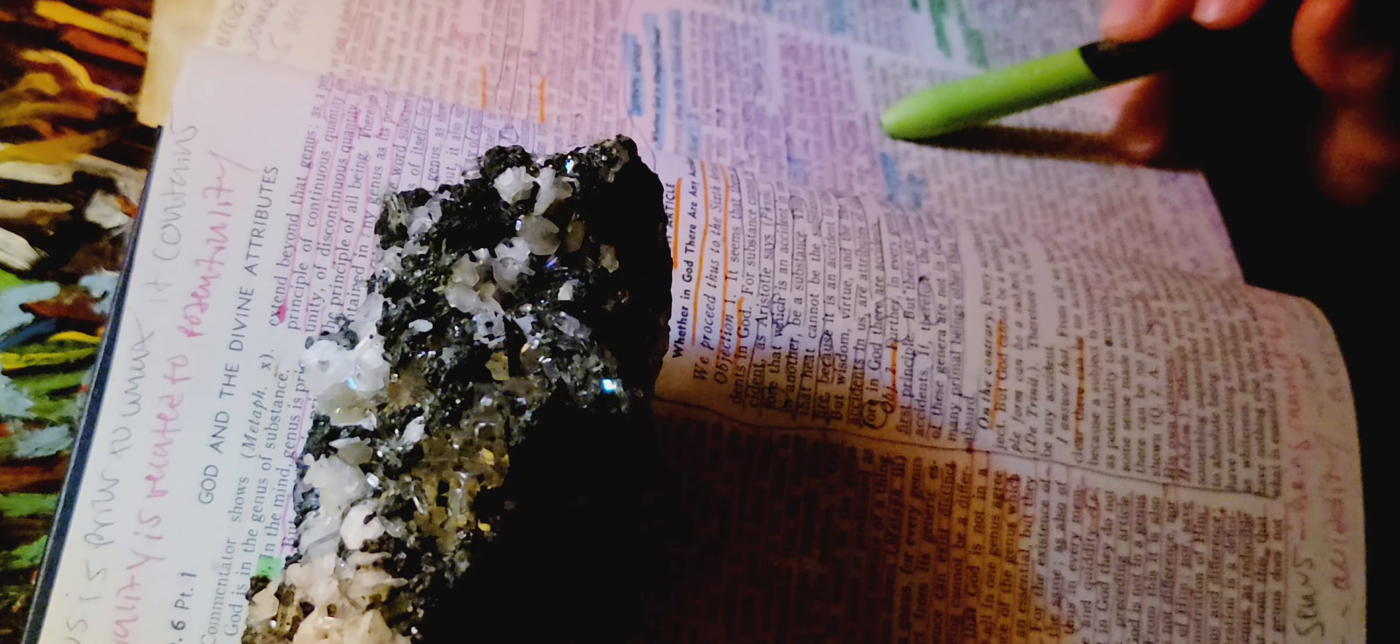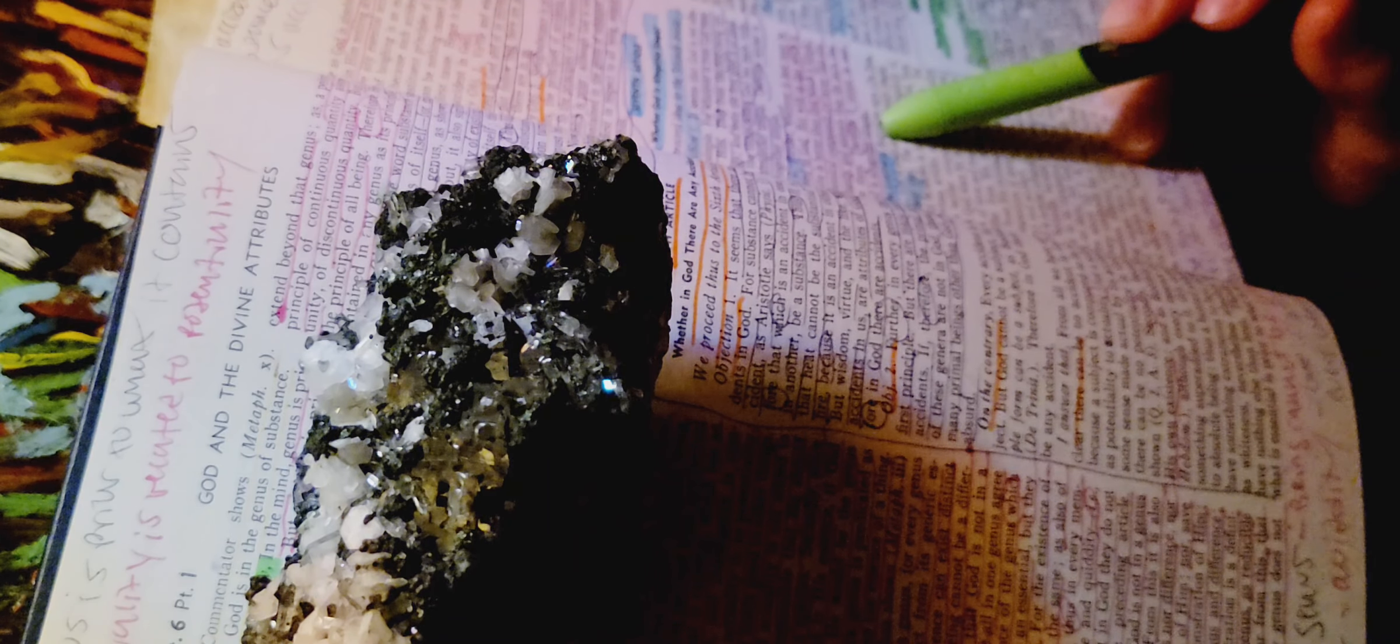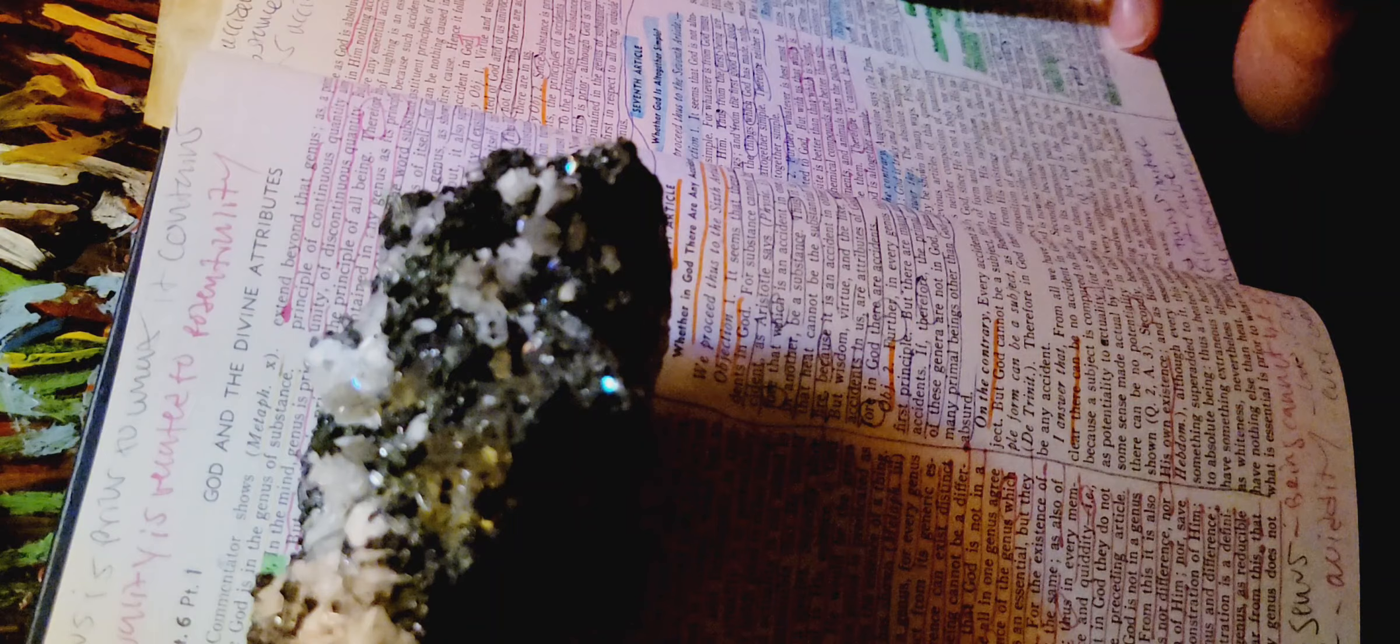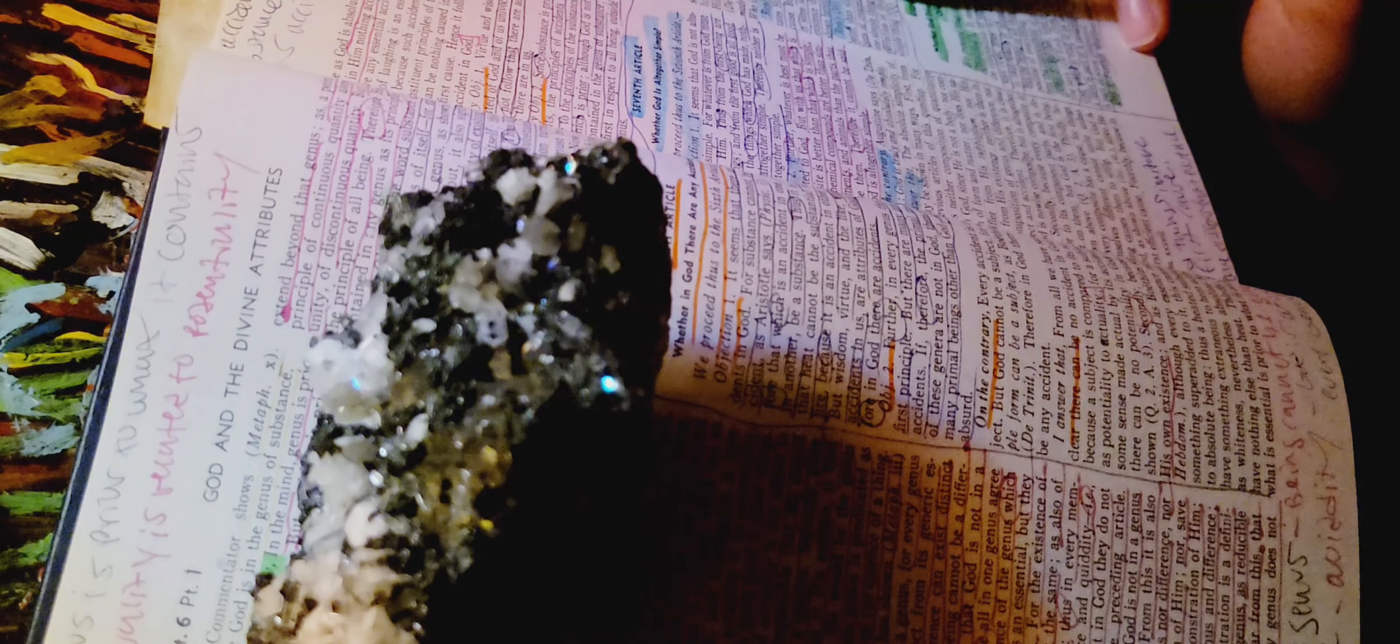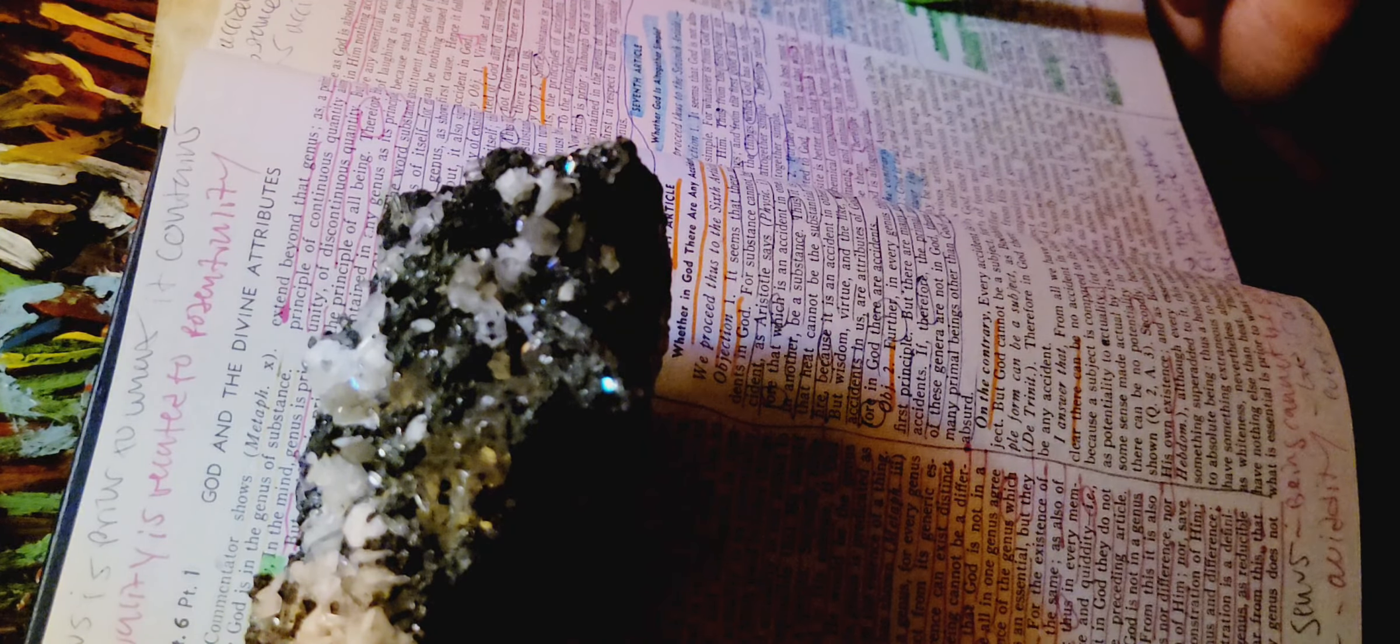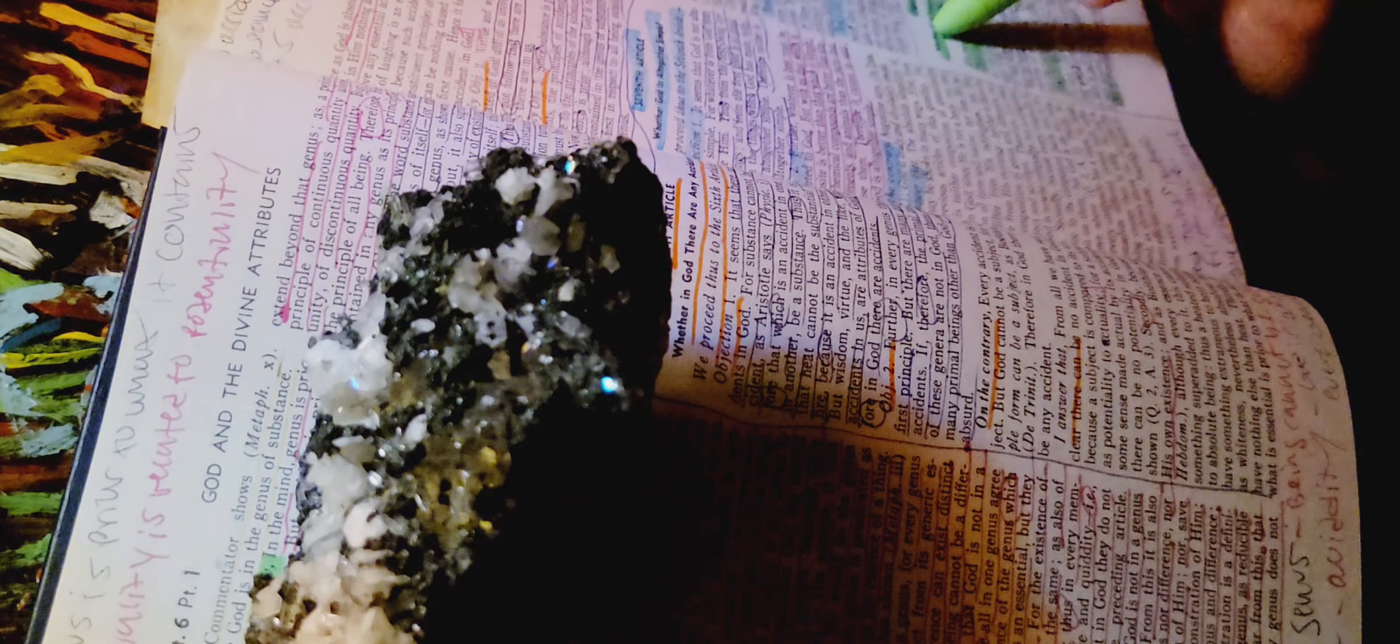Reply to objection 2. With us composite things are better than simple things because the perfections of created goodness cannot be found in one simple thing, but in many things. So you can find multiple things of good in many things in creation, not just one good. But the perfection of divine goodness is found in one simple thing.